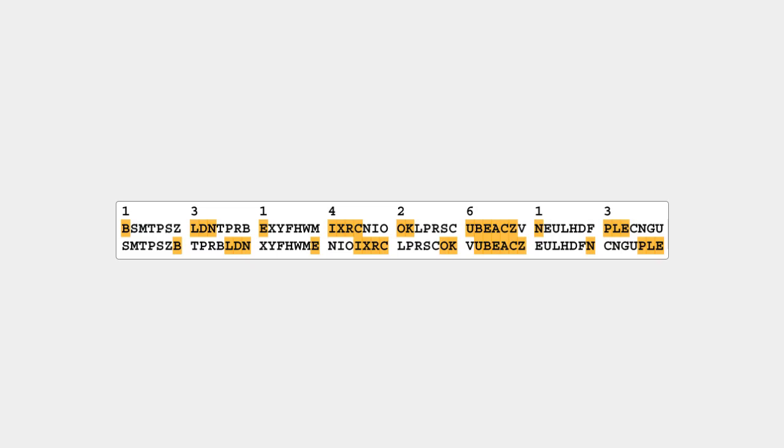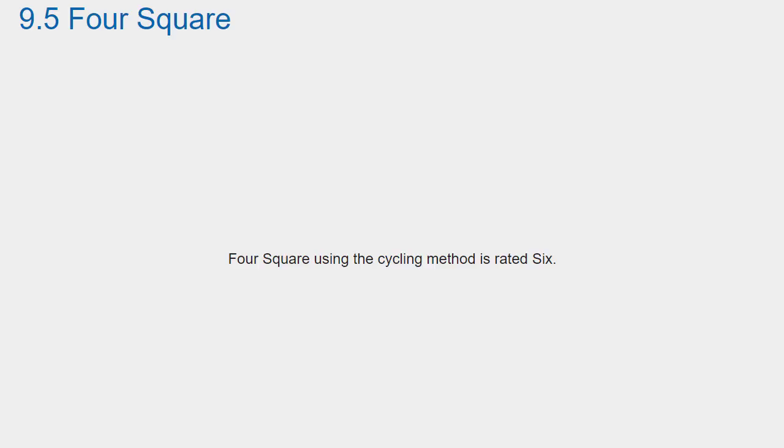Divide the ciphertext into blocks of seven characters or any other odd length. Write the successive key digits above each block. Then cycle each block left the number of positions indicated by its key digit. For example, if the key digit is 4, you would move the leftmost four digits to the right end of the block. Here is an example. Four Square using the cycling method is rated 6.